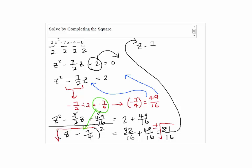We have z minus 7 over 4 squared equals 81 over 16, which is z minus 7 over 4 equals plus or minus 9 over 4.